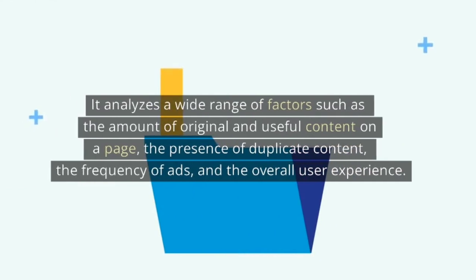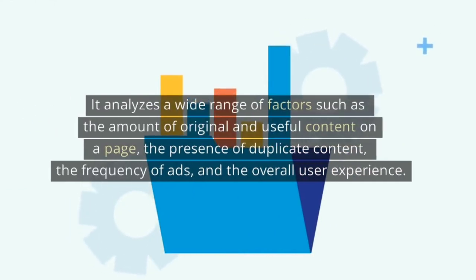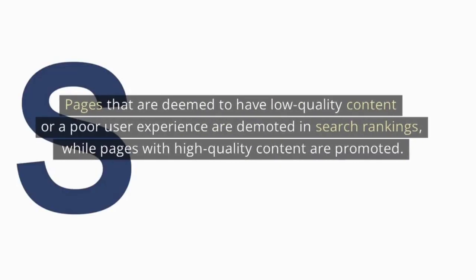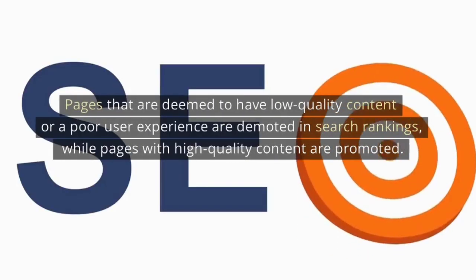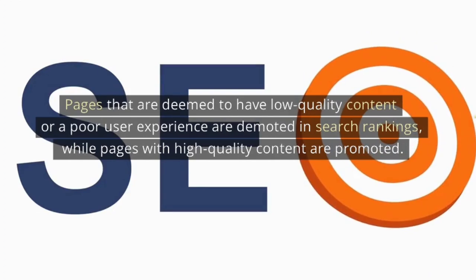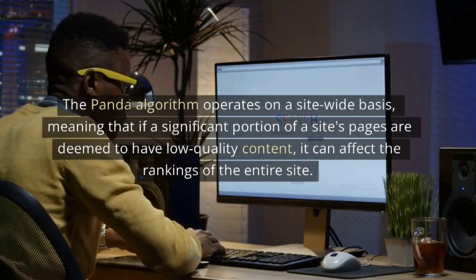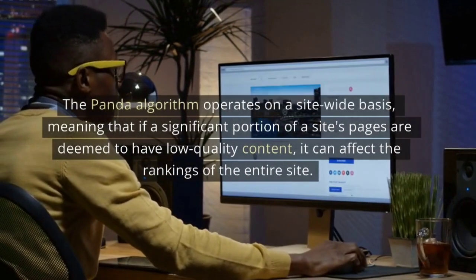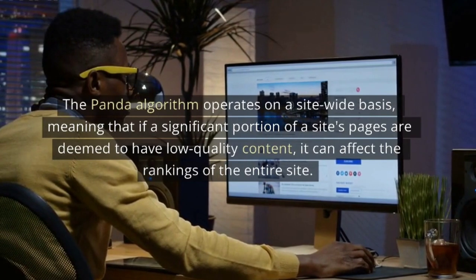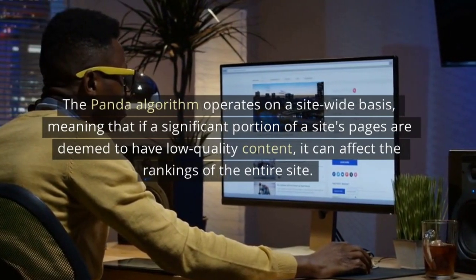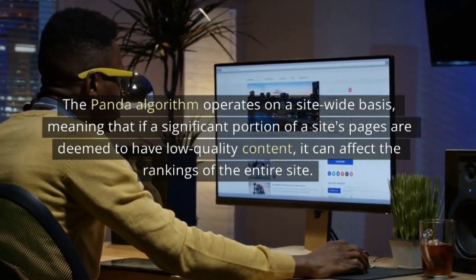It analyzes a wide range of factors such as the amount of original and useful content on a page, the presence of duplicate content, the frequency of ads, and the overall user experience. Pages that are deemed to have low-quality content or a poor user experience are demoted in search rankings, while pages with high-quality content are promoted. The Panda algorithm operates on a site-wide basis, meaning that if a significant portion of a site's pages are deemed to have low-quality content, it can affect the rankings of the entire site.